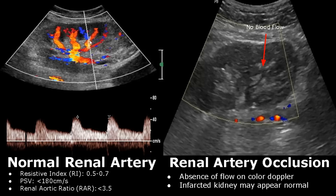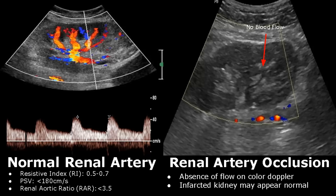The normal renal artery has a low resistance flow on spectral Doppler. There is continuous forward flow on diastole. The normal resistive index is between 0.5 to 0.7. The normal peak systolic velocity is less than 180 centimeters per second. Renal aortic ratio is calculated using PSV of renal artery divided by PSV of aorta. This ratio is usually less than 3.5, but some institutions use less than 3.